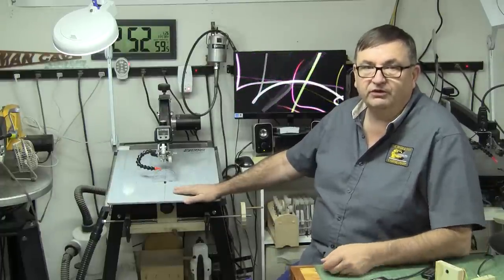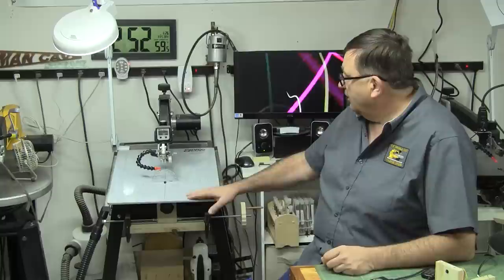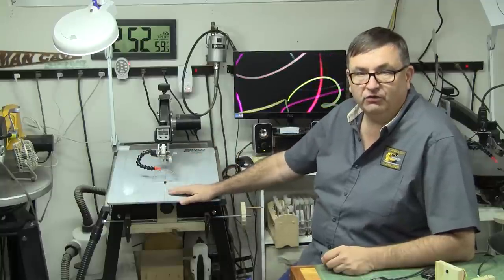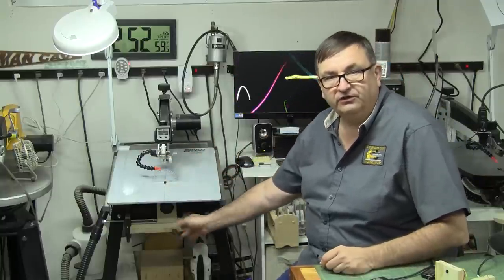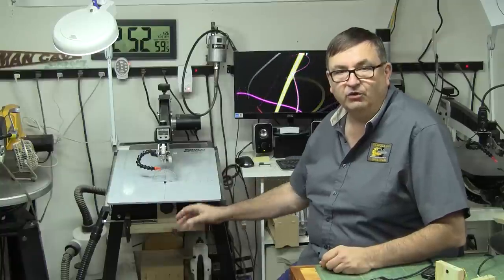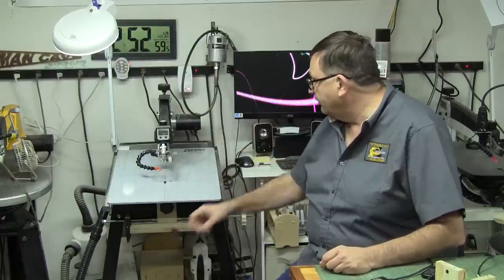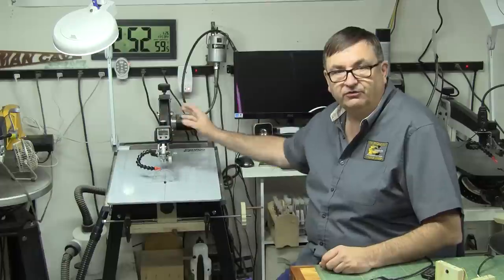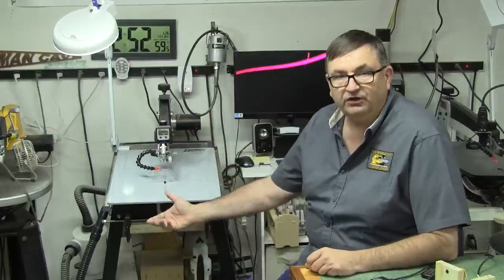You do it by loosening the knob down here underneath the table, and you just hold the knob or grab a hold of the head and you just move it. Most scroll saws have a rack and pinion where when you turn a dial it moves it left to right.